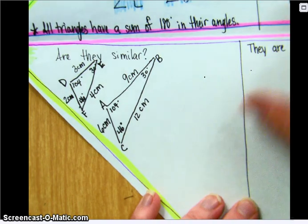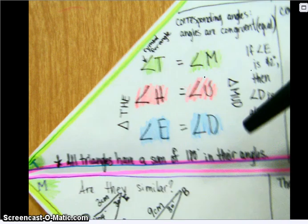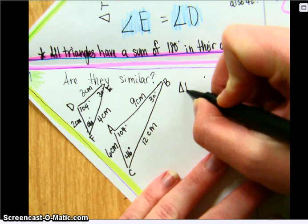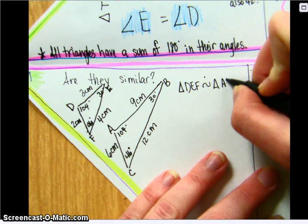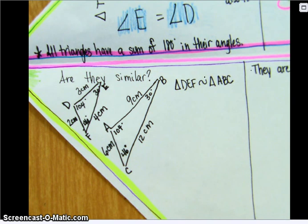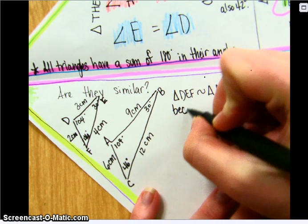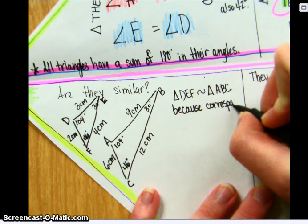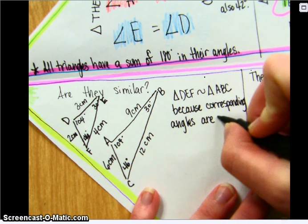So knowing what we know about similar figures, if we look directly above, the corresponding angles are congruent. So if we remember that about similar figures, we can go ahead and state that triangle DEF is similar to triangle ABC. Don't just say that they're similar, but support with some reasoning because their corresponding angles are congruent.